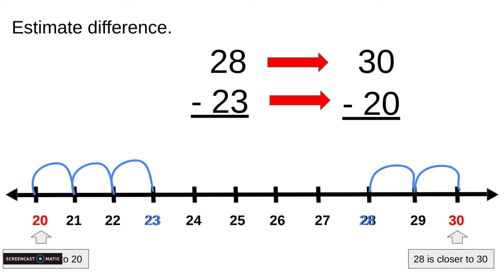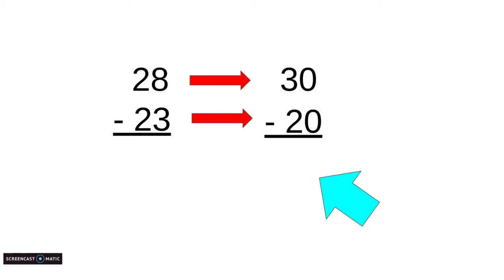Now instead of 28 minus 23, I have 30 minus 20. 30 minus 20, 0 minus 0 equals 0, 3 minus 2 equals 1. It's about 10. That is my estimate difference.